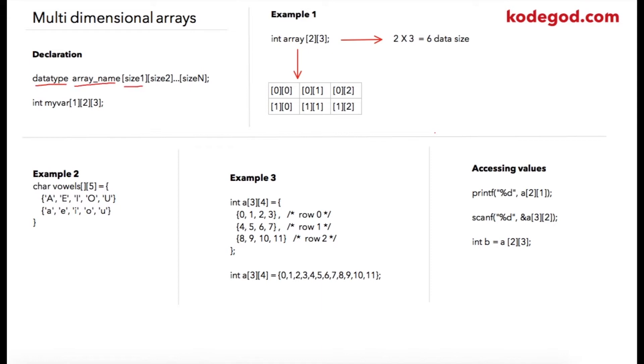Because we are saying these are multi-dimensional arrays, when we have two different sizes those are two-dimensional arrays. If we have three sizes then those will be called three-dimensional arrays, and so on. Technically you can declare arrays with n number of dimensions.